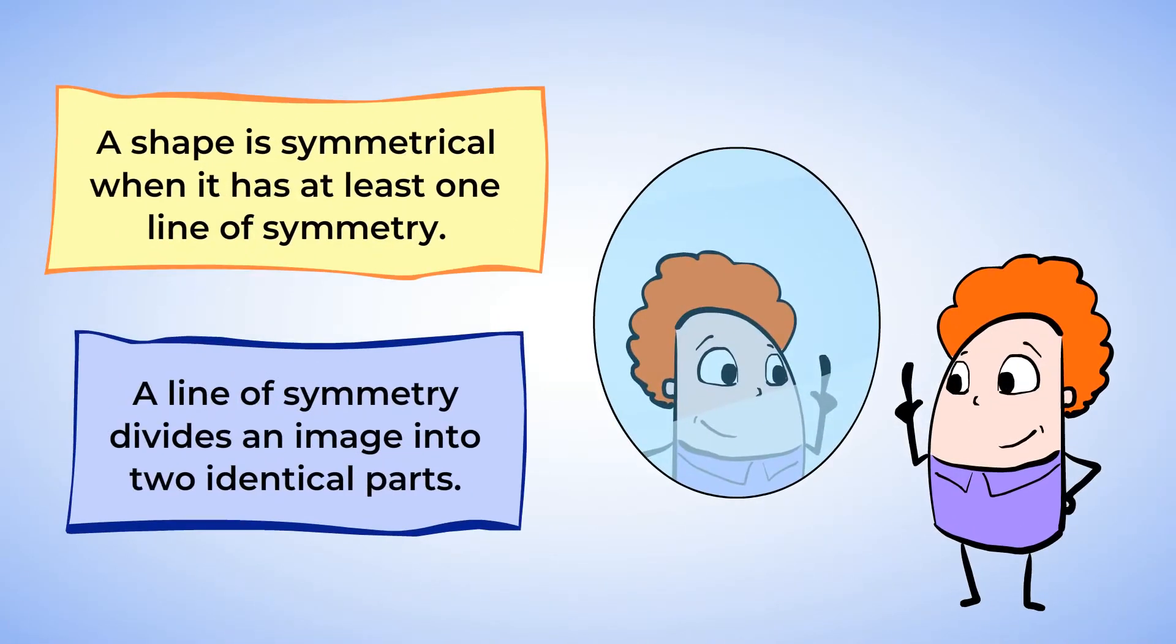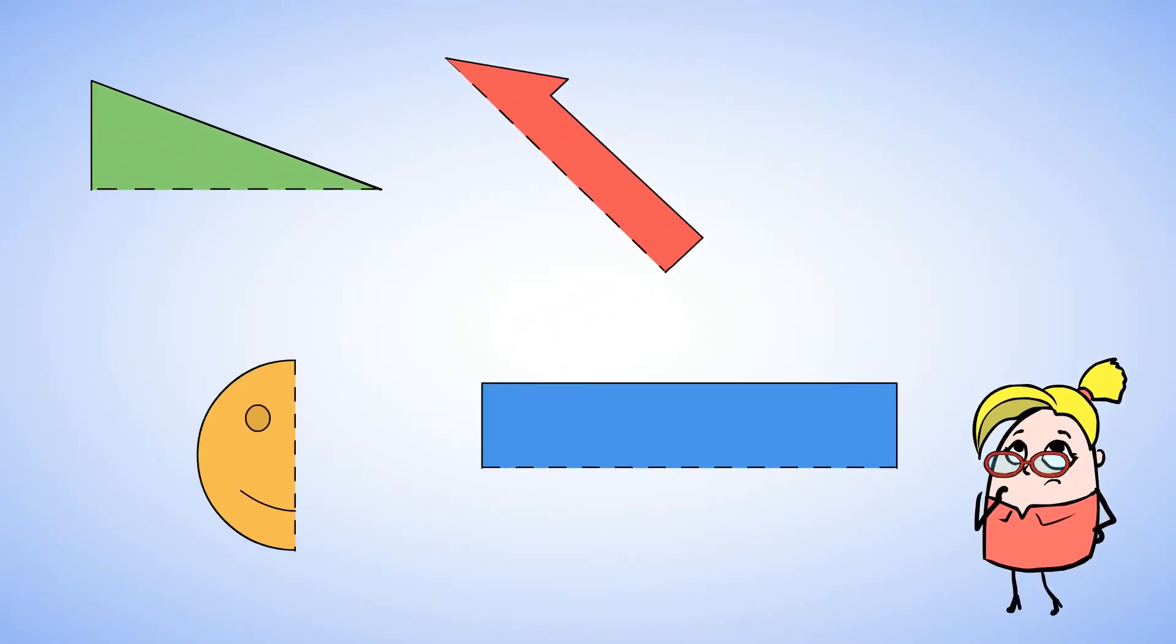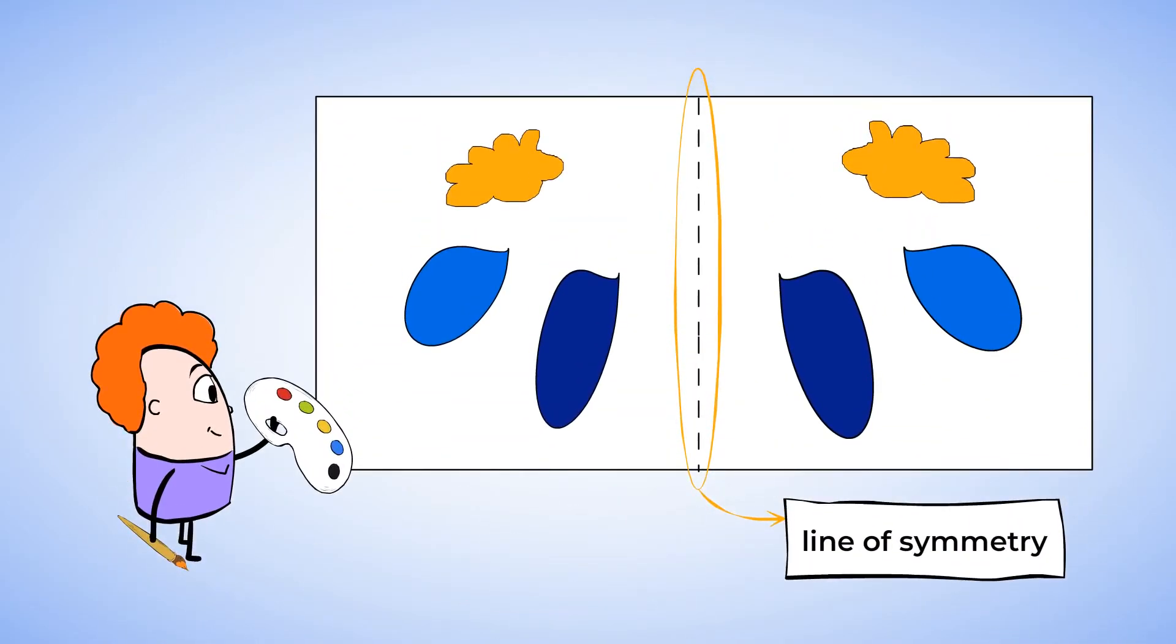You did a great job learning about lines of symmetry and symmetrical figures. Remember, for a shape to be symmetrical, it needs to have a line of symmetry. The line of symmetry is what splits the shape into two identical parts. And shapes can have more than one line of symmetry.